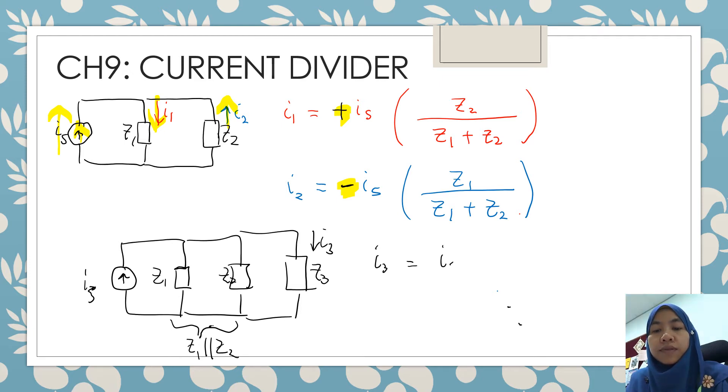What is I3 then? It is equal to Is into the opposite of current flowing through impedance 3, which is impedance 1 in parallel with impedance 2. And then the summation of all impedances in parallel. So impedance 1 parallel with 2, plus impedance 3. So what is the sign? Just look at the current direction. If this is in opposite direction, then our sign will be positive. You don't need to write down the positive sign.